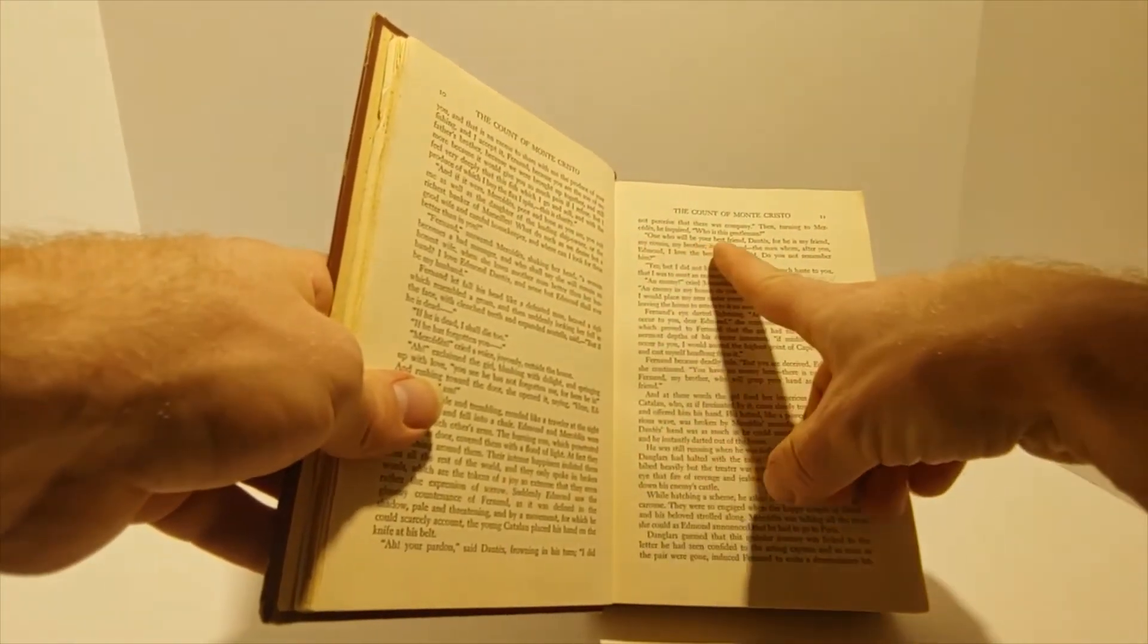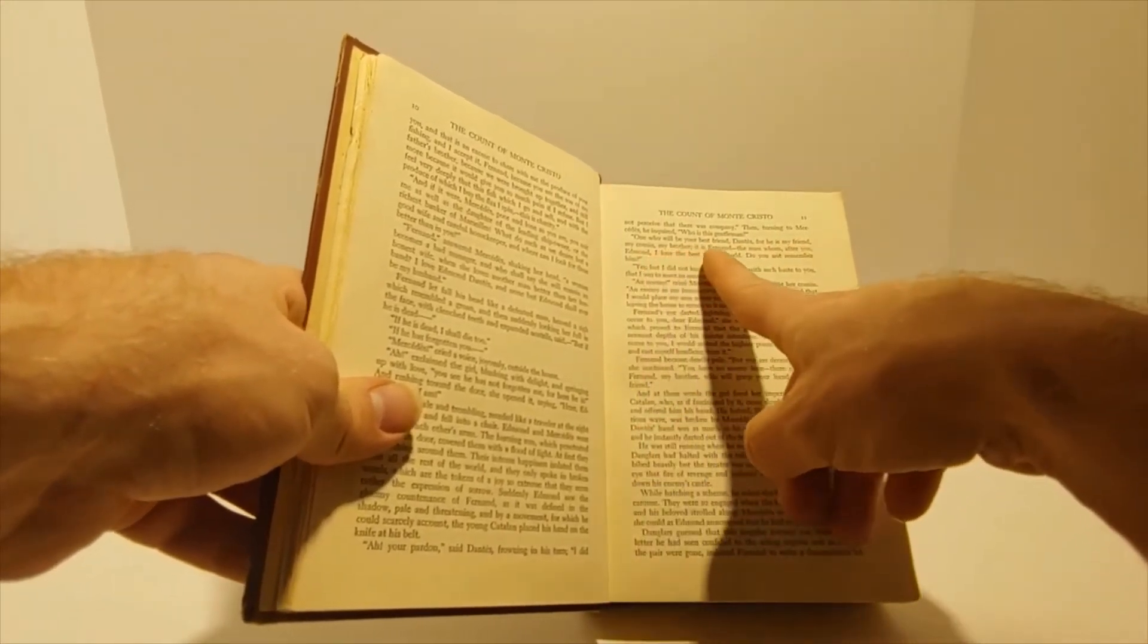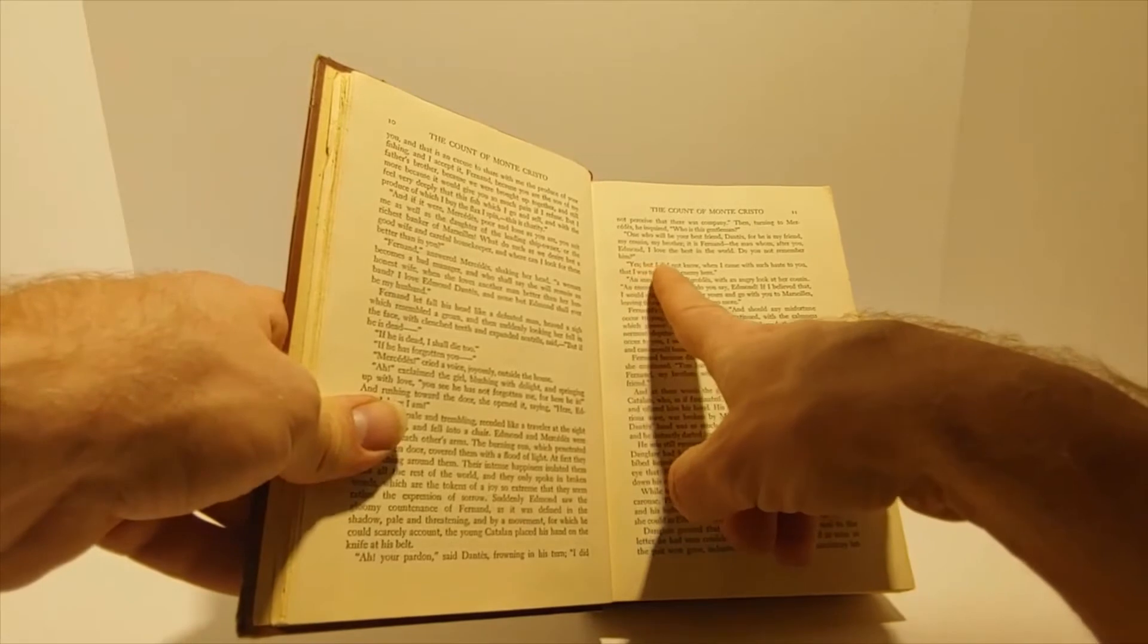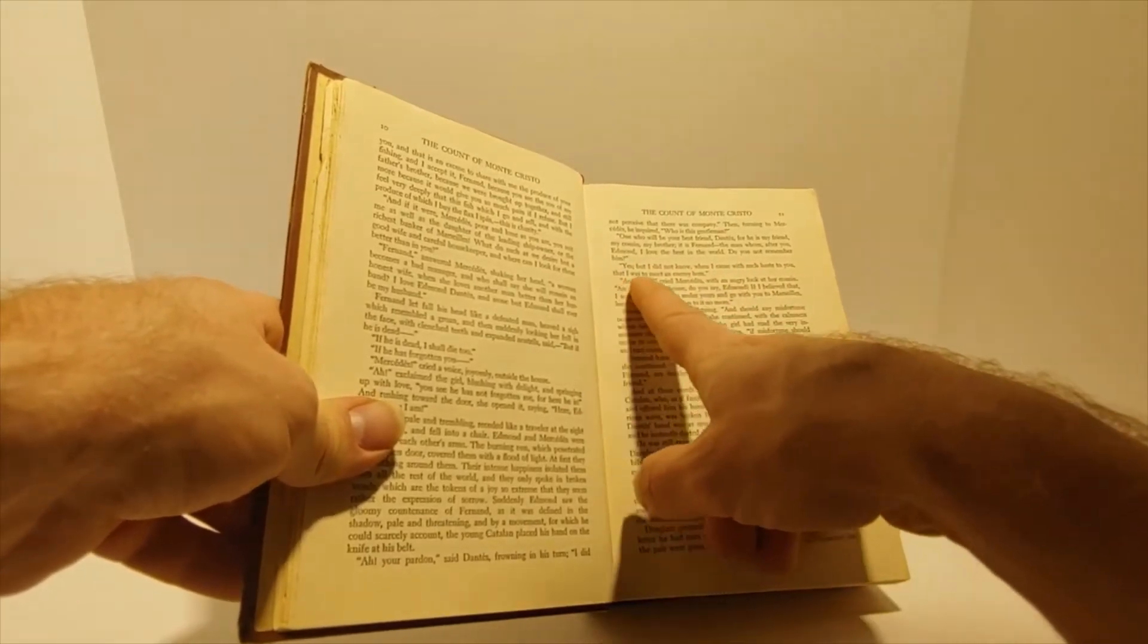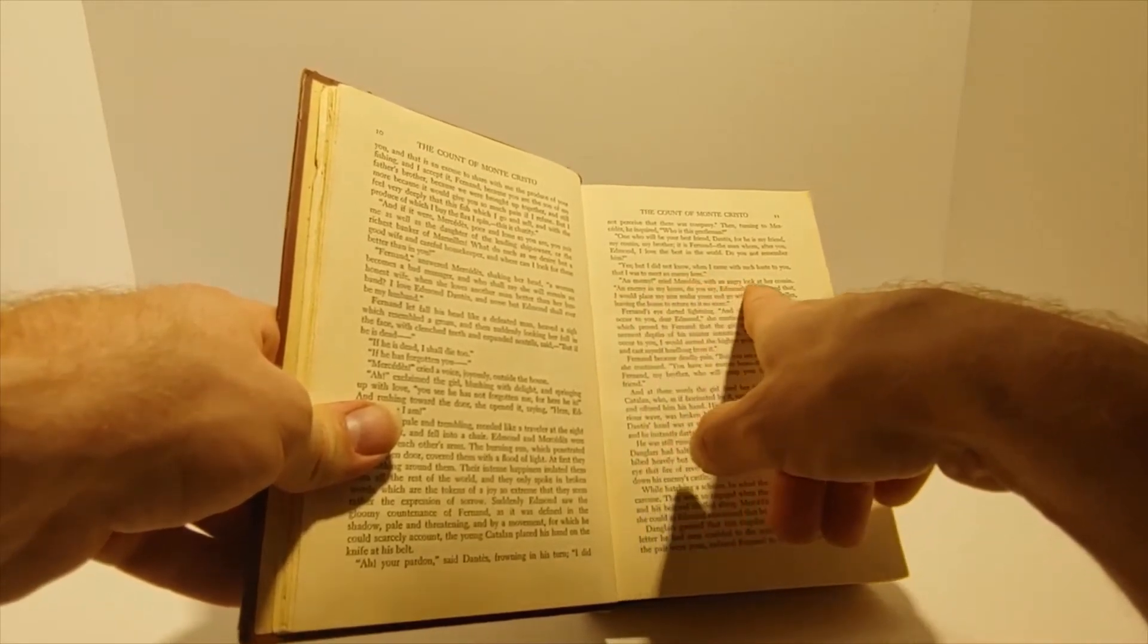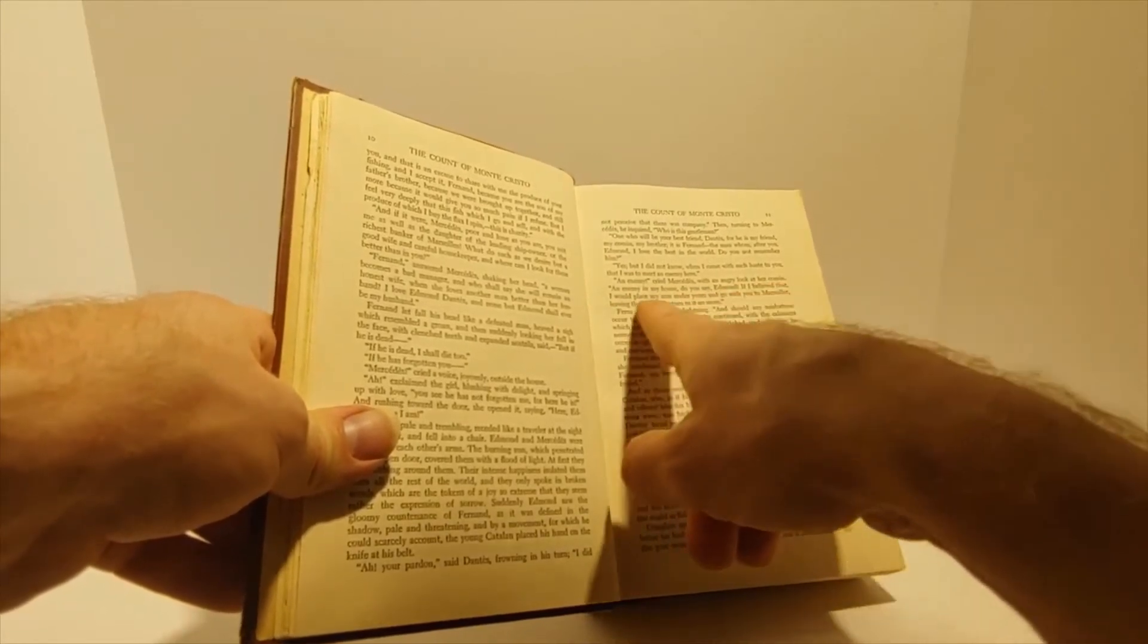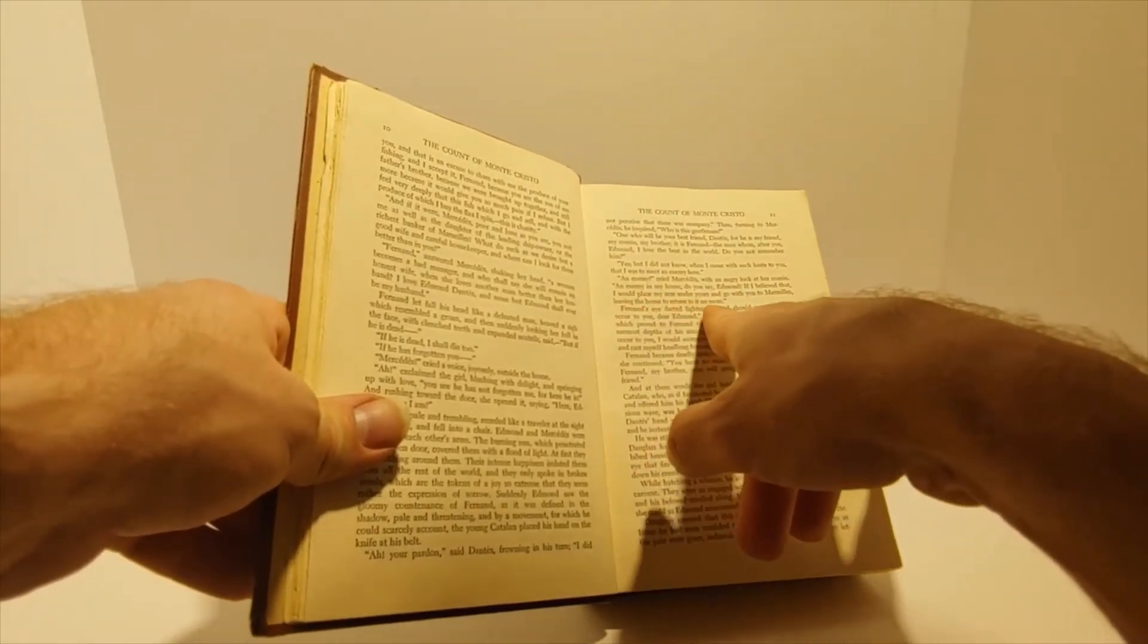One who will be your best friend, Dantes, for he is my friend, my cousin, my brother. It is Fernand, the man whom, after you, Edmond, I love the best in the world. Do you not remember him? Yes, but I did not know, when I came with such haste to you, that I was to meet an enemy here. An enemy? cried Mercedes, with an angry look at her cousin. An enemy in my house, do you say, Edmond? If I believed that, I would place my arm under yours and go with you to Marseille, leaving my house to return to it no more.